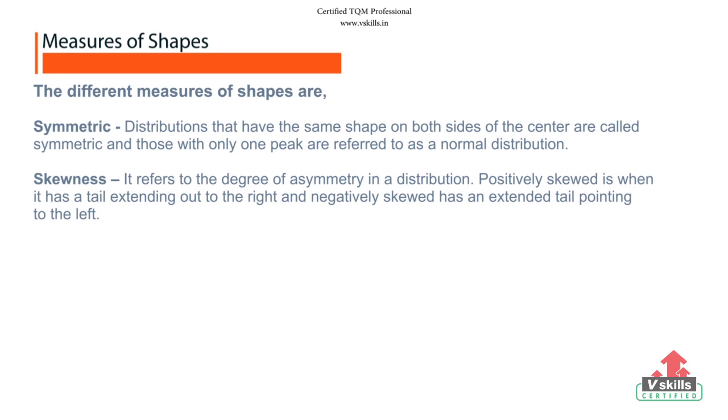Let's now discuss the different measures of shapes. First is symmetric. For symmetric, distributions that have the same shape on both sides of the center are called symmetric, and those with only one peak are referred to as normal distribution.